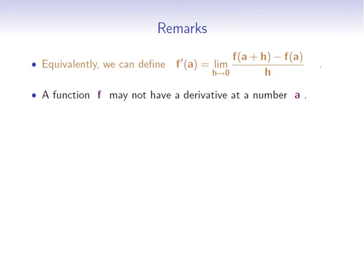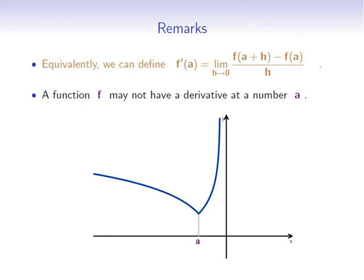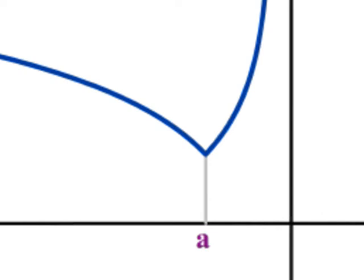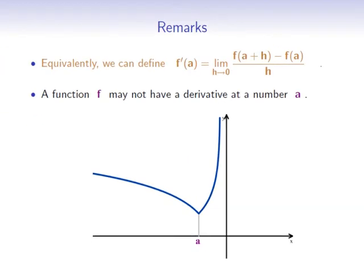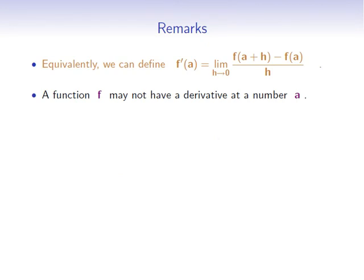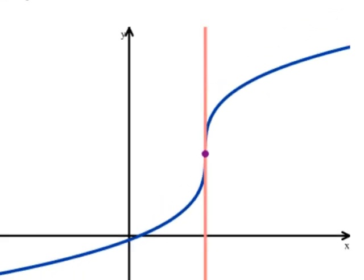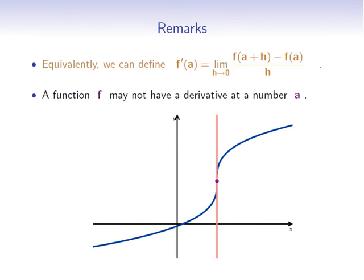A function may not have a derivative at a certain point. This can happen if the graph has a corner — at a corner there is no tangent line and therefore no derivative. Another possibility is that the graph has a tangent line at a, but that tangent is a vertical line. Since vertical lines have no slope, the function will not have a derivative at that point.